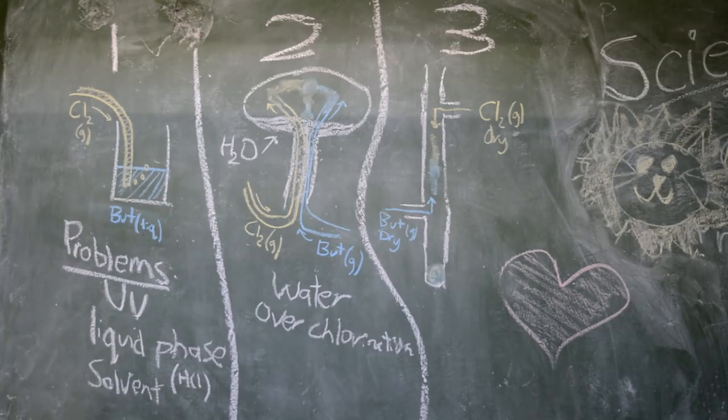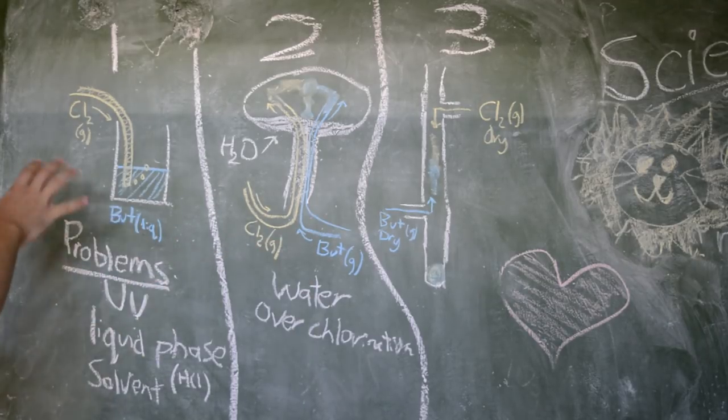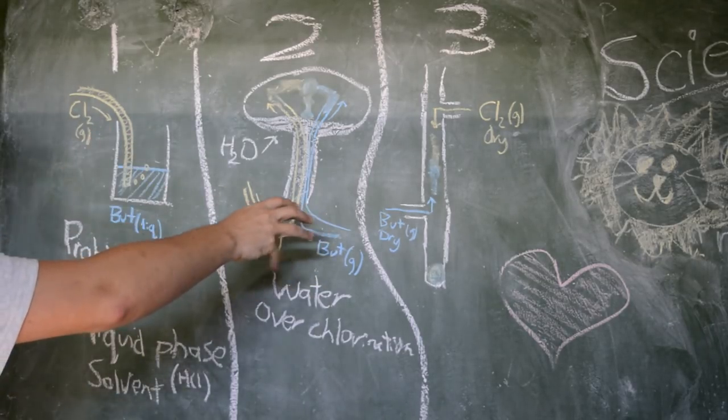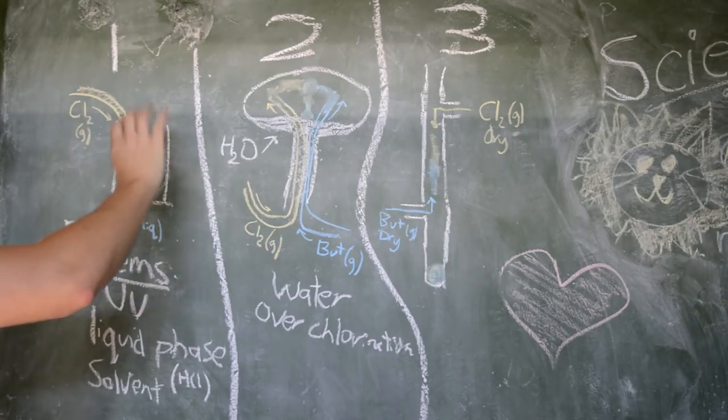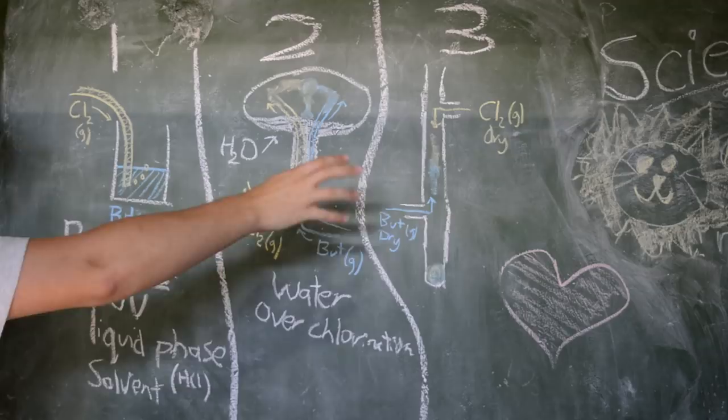All right, hello everyone. Welcome back to the project. So I just want to do a quick recap of where we are in terms of the chlorination. This is all to do with the chlorination of taking isobutene plus chlorine gas to make methyl chloride and the byproduct of HCl gas.